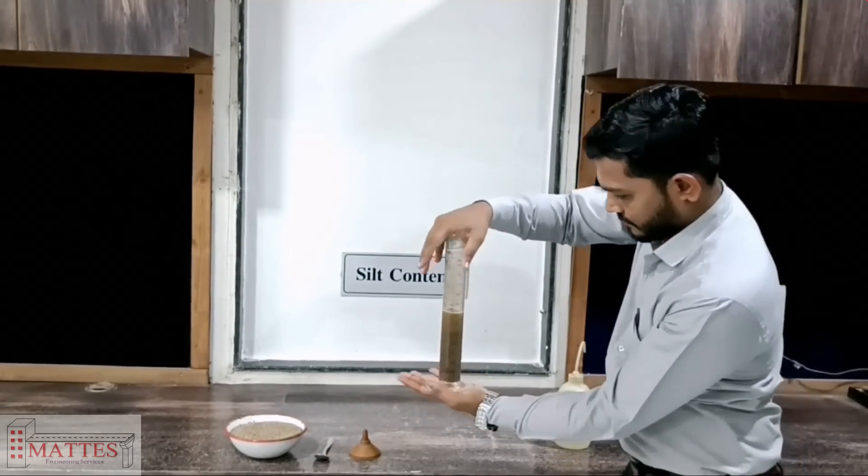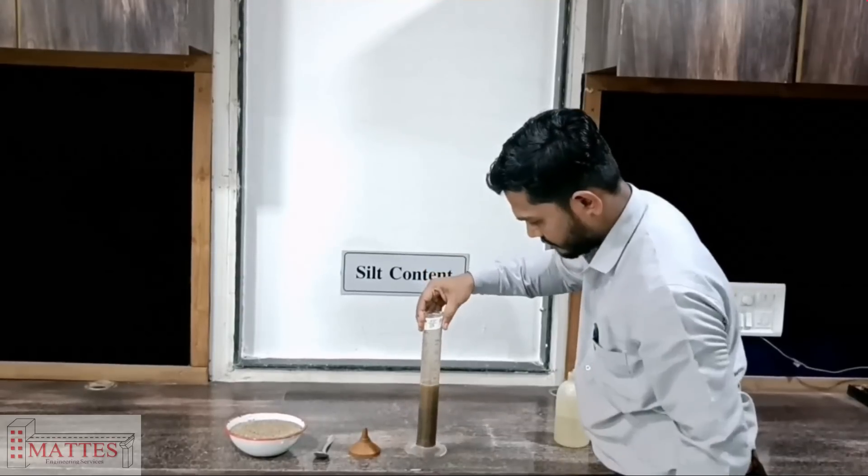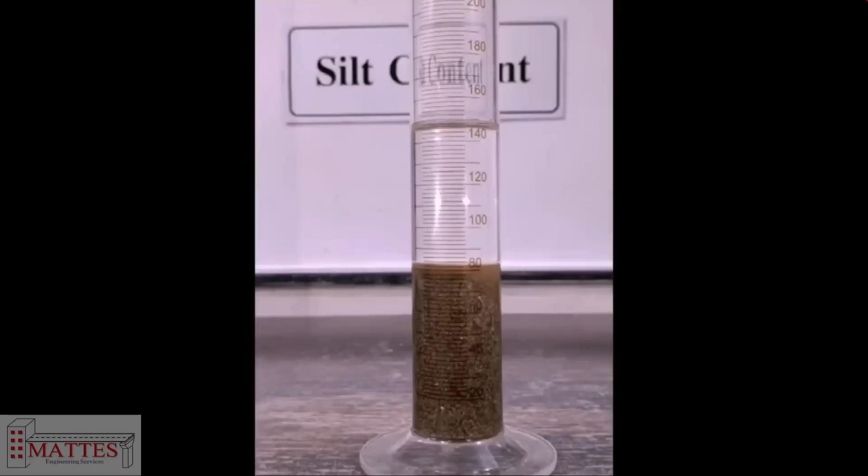Allow contents in the cylinder to settle down for 3 hours. Three hours later, the silt content shall be settled over the sand layer.